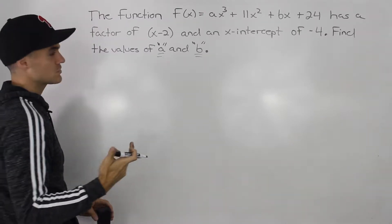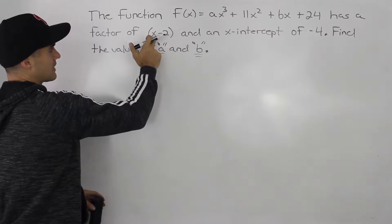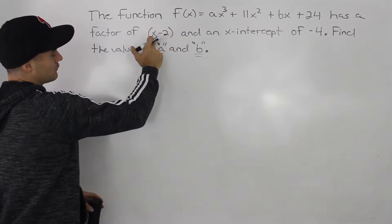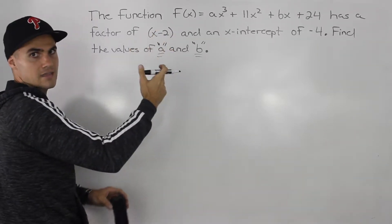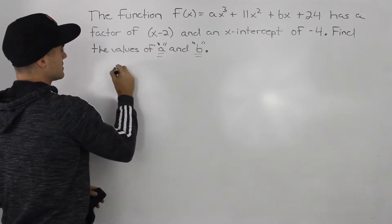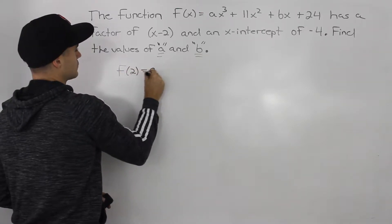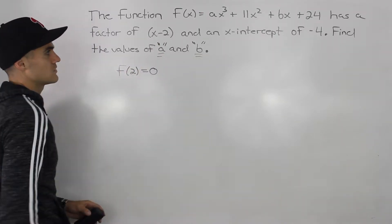Well, a factor of x minus 2, if we use the factor theorem, that means that if a polynomial function has a factor x minus k, that means f(k) is going to equal 0. So in this case, that means f(2) is equal to 0, because that k value is 2.